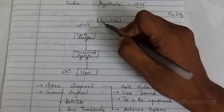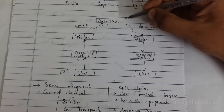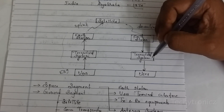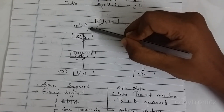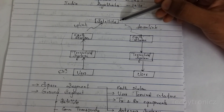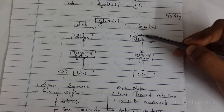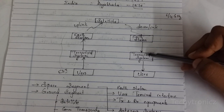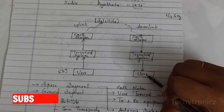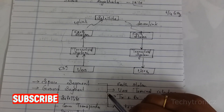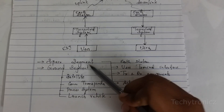When the signal is received by the satellite, the satellite will do further processing and transmit the signal to the other earth station — that is called downlink. So from this earth station, when the signal goes to satellite, that is called uplink. Then from satellite to this earth station, that is called downlink. We have two segments in satellite communication: space segment and the ground segment.